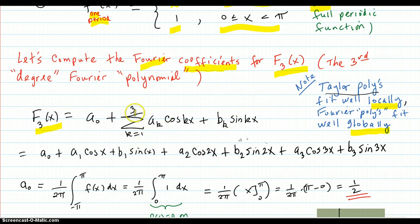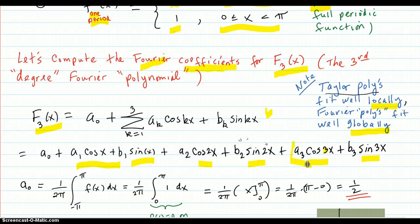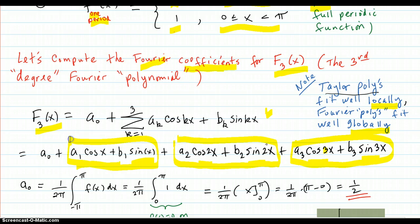This is what it is — we go k equals one to three. We've got our cosine terms and our sine terms. Written out, it would look like this: cosine, sine, cosine, sine, cosine, sine. Notice that the periods of each of these parts are getting smaller, because the period is 2π over 3, for example. These are called harmonics — they're refinements inside the sound, if you're talking about sound waves.